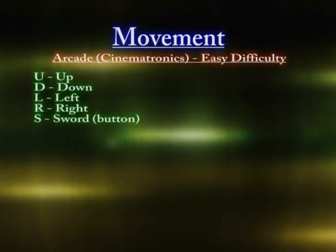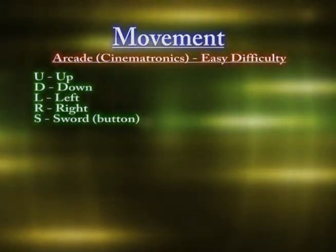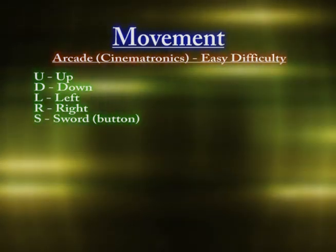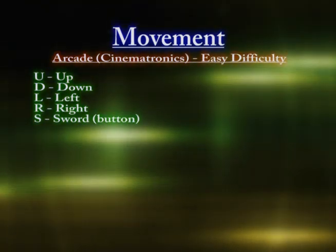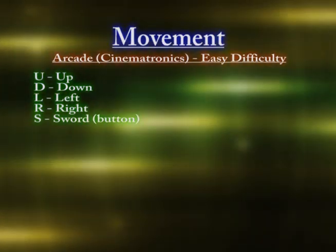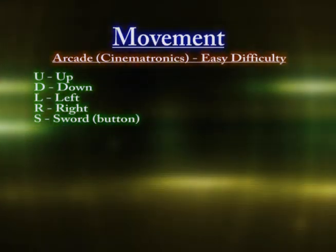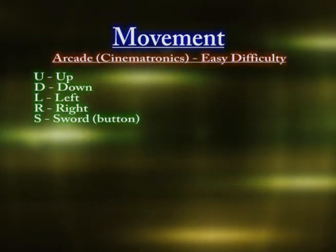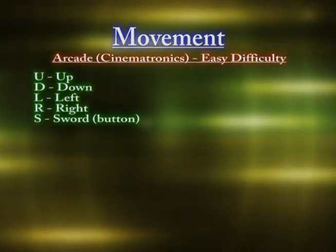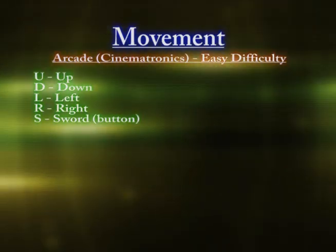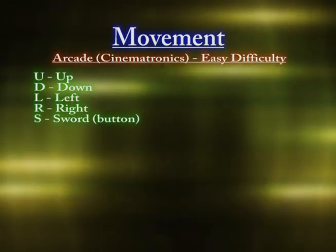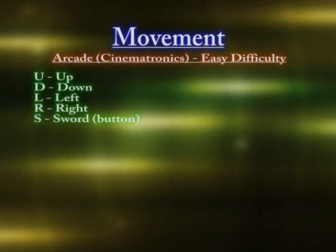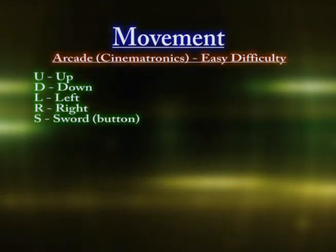When you play Dragon's Lair, there's movement — you have up, down, left, right, and the sword button. What I'm going to go over is the arcade version from Cinematronics, easy difficulty. U is up, D is down, L is left, R is right, and S is sword. These can be buttons or joystick — it could be keyboard, mouse clicking left or right. It doesn't matter. These are the five things you had in the arcade version.